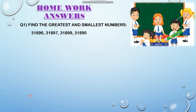So the first question was: find the greatest and smallest numbers. The numbers given are 31,896; 31,897; 31,899; and 31,890. You have to find out the greatest and smallest number. First, check whether all the numbers have the same number of digits or not.